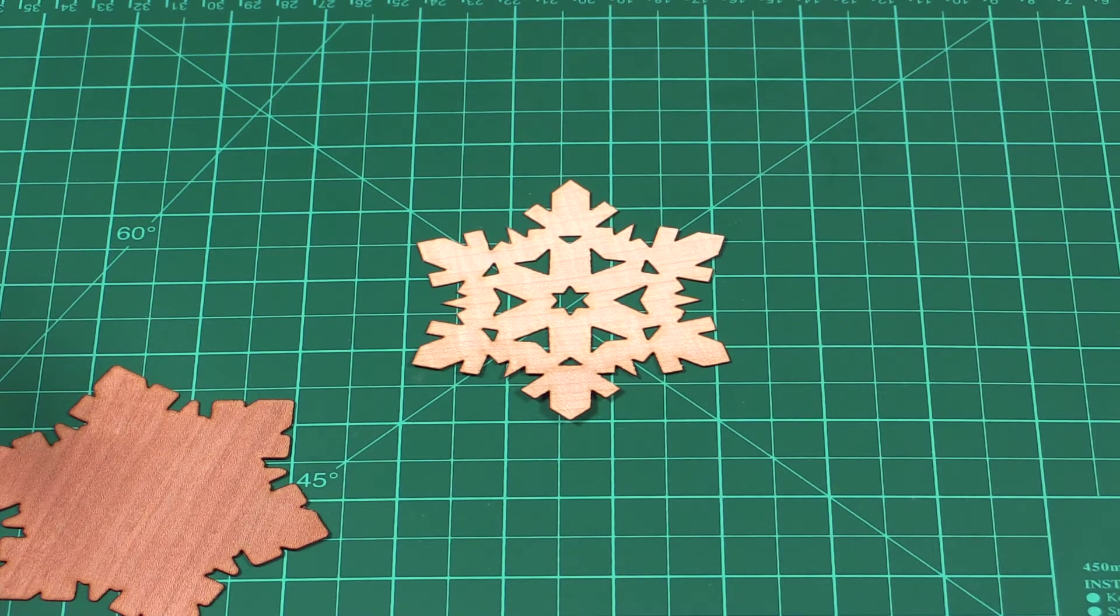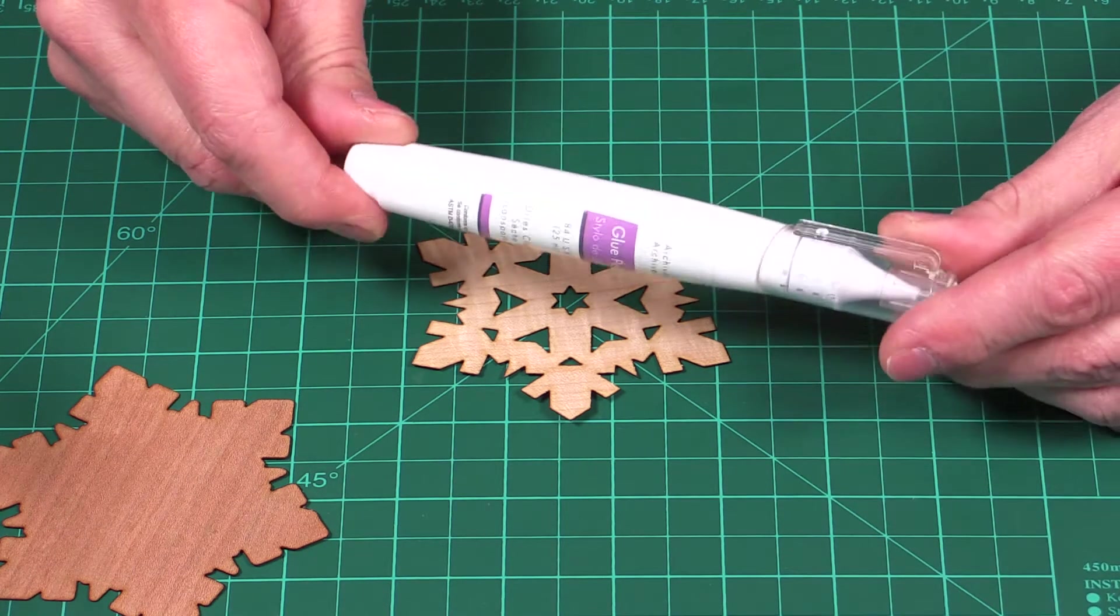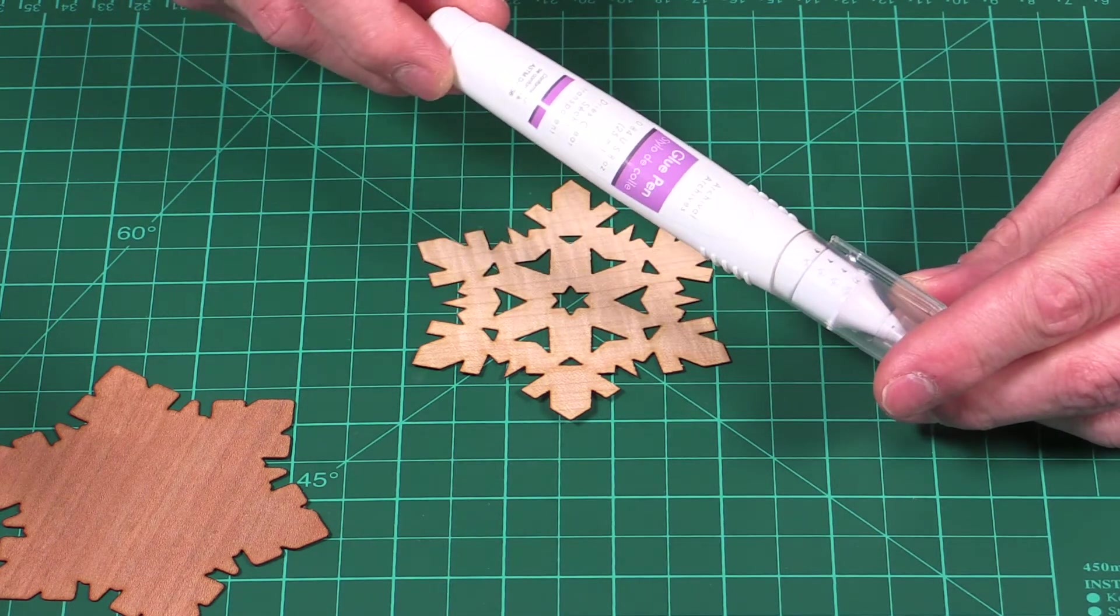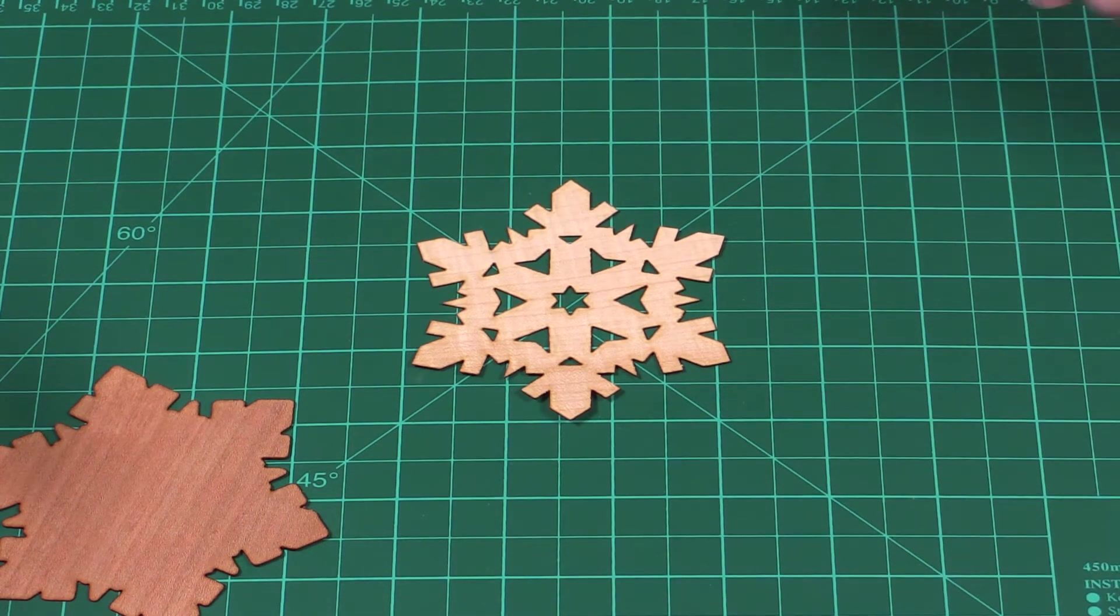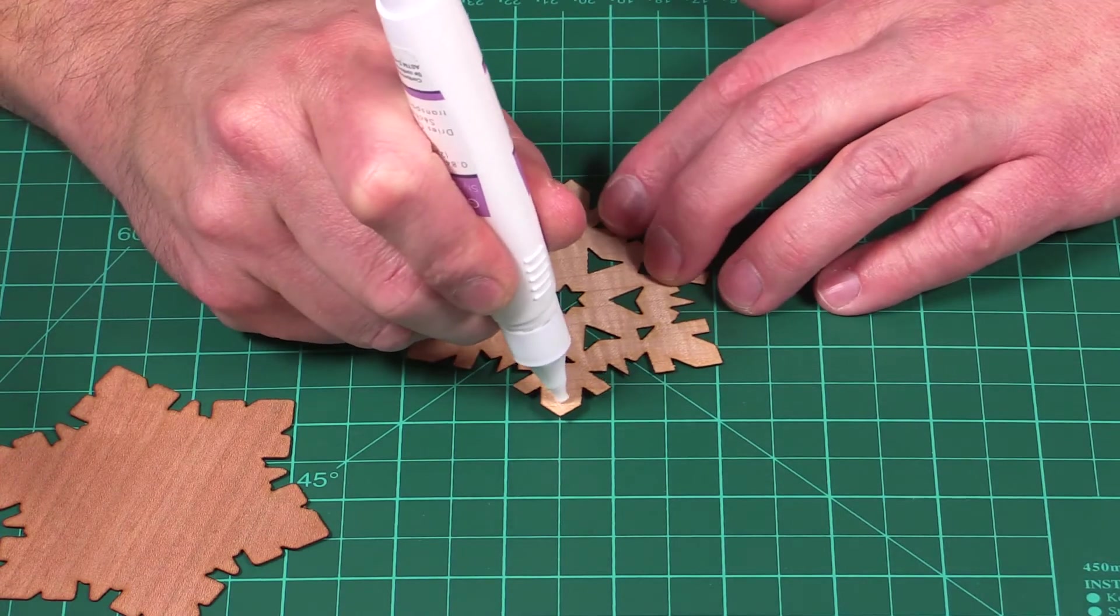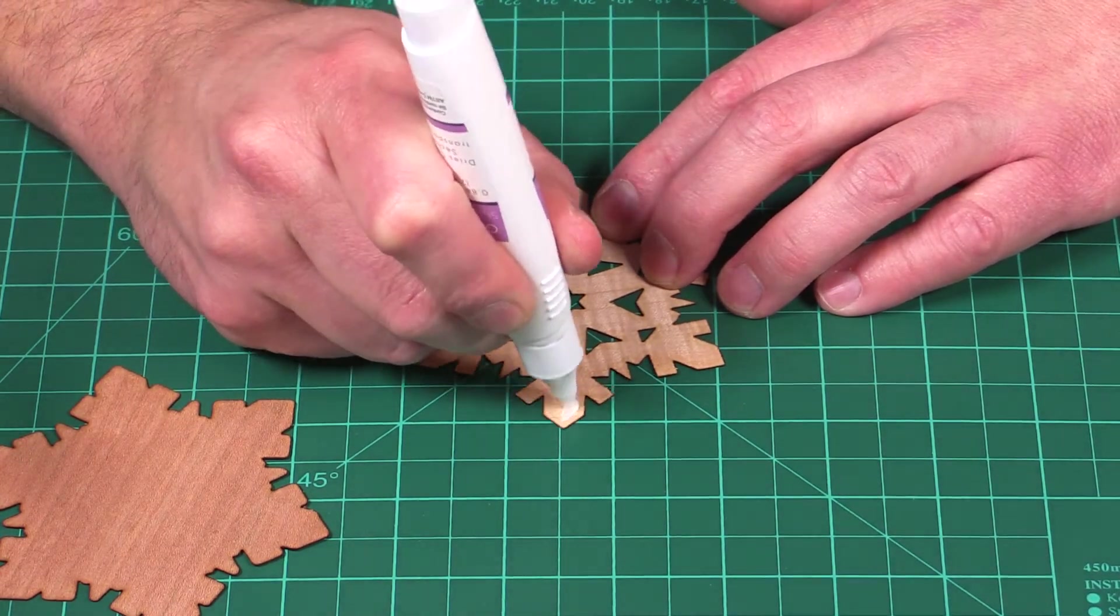The next step is that you want to glue your three pieces of snowflake together to make the ornament. I'm using a glue pen here I purchased at my local dollar store. I've also tested white glues and wood glues and they all work great. I'm using the glue pen simply because it was the easiest to use, but you can use whatever glue is available to you.